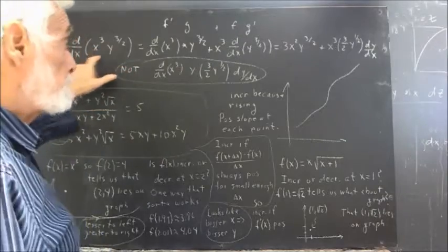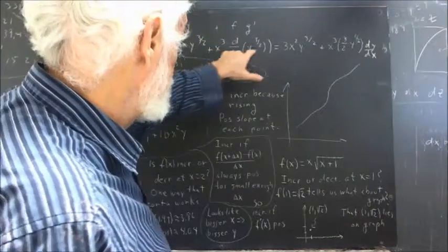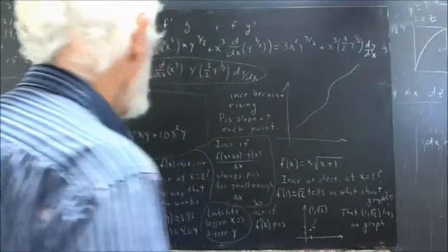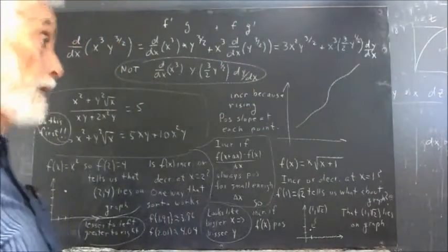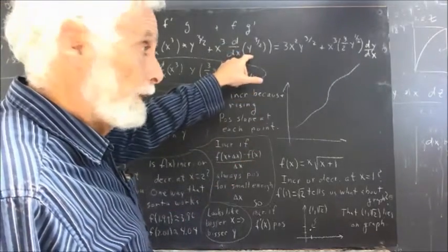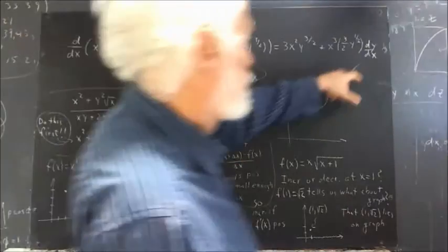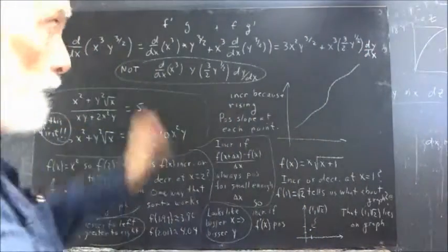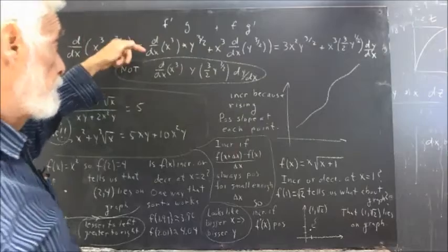Plus x cubed times the derivative with respect to x of y to the 3 halves. That's your f g prime. And then the rest of it is fairly straightforward, especially since people did pick up on the idea that when you take an x derivative of a function of y, the chain rule gives you this dy dx. So it all works out in a very straightforward manner.